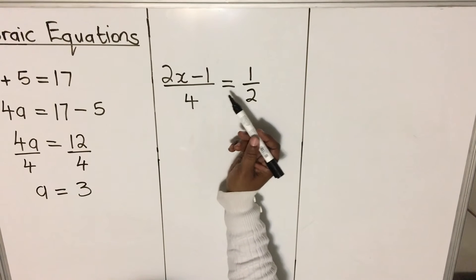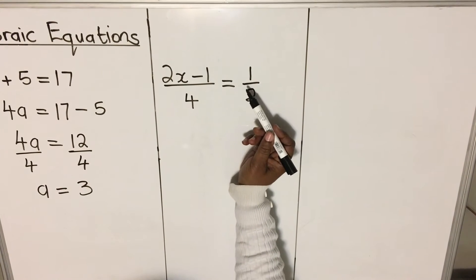So when we have one fraction, this side equals one fraction. We cross-multiply.